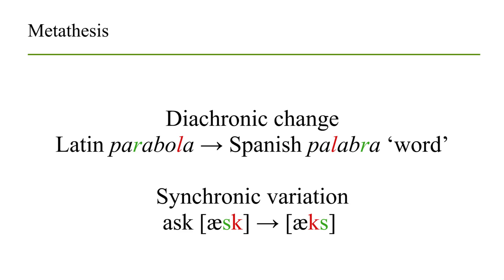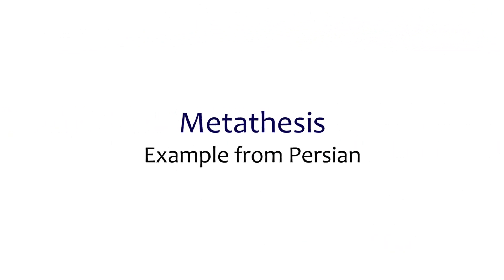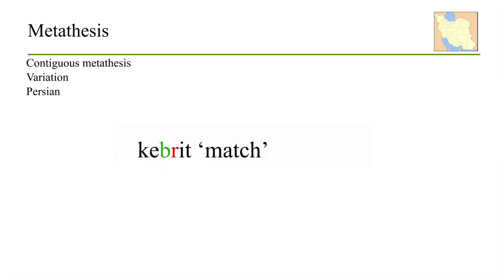It's interesting how the same phenomenon occurs diachronically or synchronically, across languages, within the same language, or cross-linguistically between different varieties. An example from Persian: the word 'kebrit,' meaning 'match' (the thing you start fire with), is sometimes pronounced 'kerbit,' especially by children or in certain sociolectal situations.